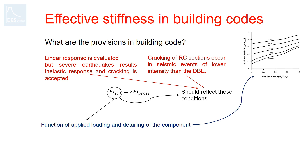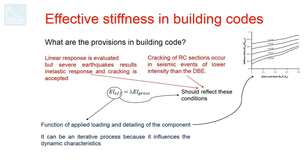Effective stiffness is a function of applied loading and the detailing of the component, which we will see later. It can be an iterative process since the assumed effective stiffness of RC elements in the structural analysis model influences the dynamic characteristics of the structure, which in turn changes the results of the analysis and effective stiffness.